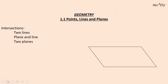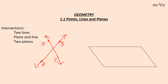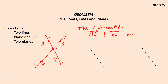So let's talk about some intersections. Thinking back to algebra, when two lines intersect, two lines always intersect at a point. Let's say we labeled this line AB and this line XY. The intersection of line AB and line XY is at the point right in the middle — let's go ahead and label that point P.